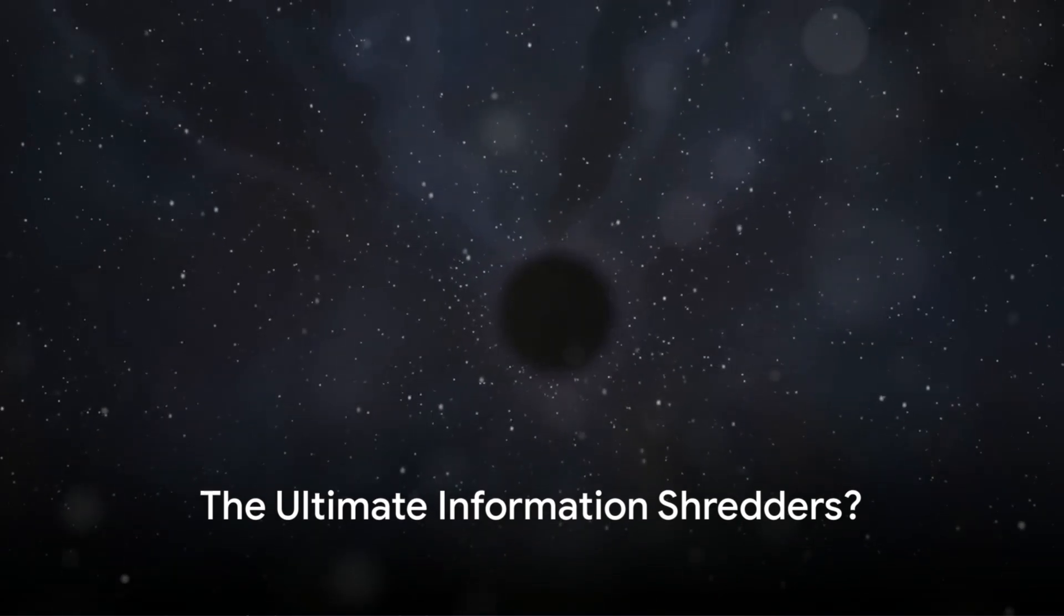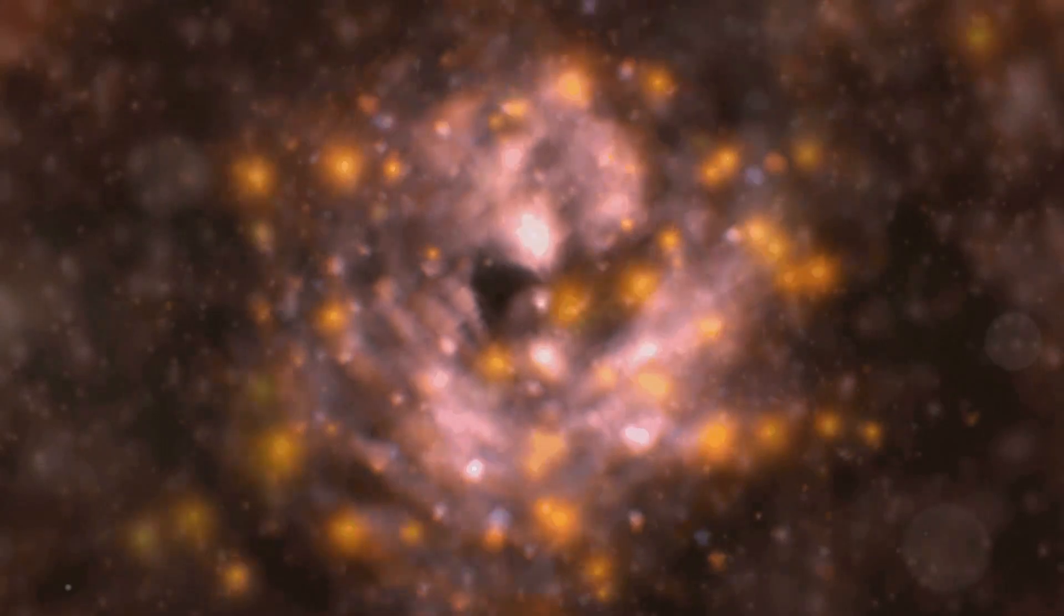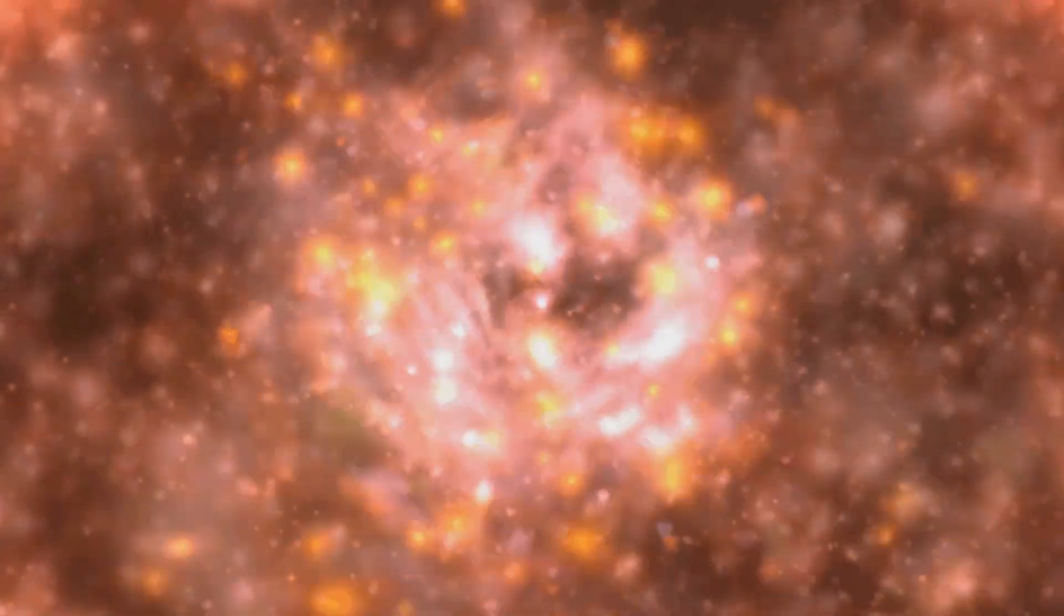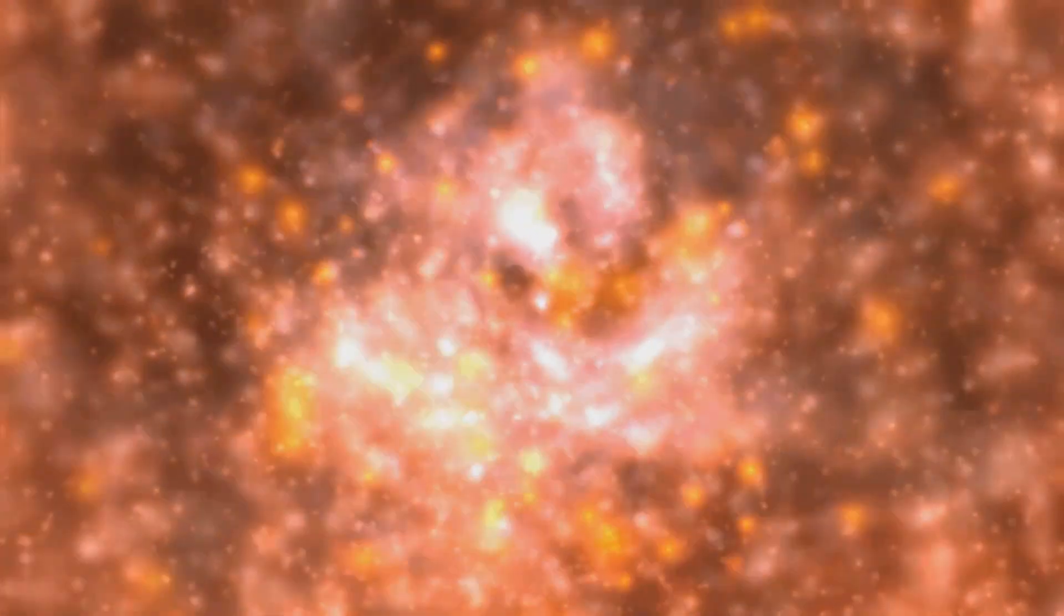Here's where black holes throw a cosmic curveball into the mix. According to Einstein's theory of general relativity, anything that crosses a black hole's event horizon is inevitably crushed into oblivion at the singularity, a point of infinite density at the black hole's core. If information is truly lost in a black hole, it violates the fundamental principle of quantum information conservation, shaking the very foundations of our understanding of the universe.